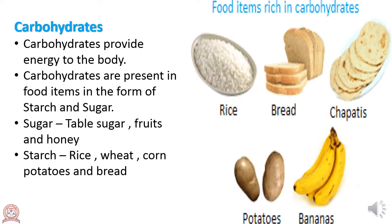We shall start with carbohydrates. Carbohydrates are important to our body — they provide us the energy needed to work through the day. Starch and sugar are the two main types of carbohydrates found in food. Table sugar, fruits, and honey are some sources of sugar. Milk contains a type of sugar called lactose.